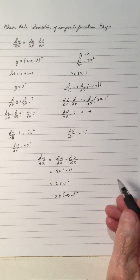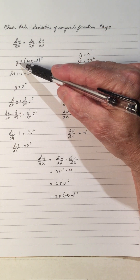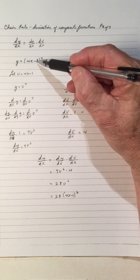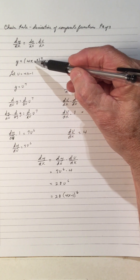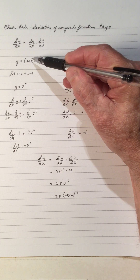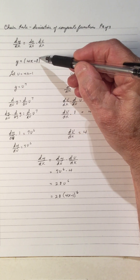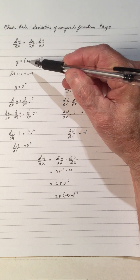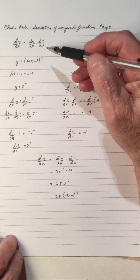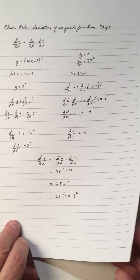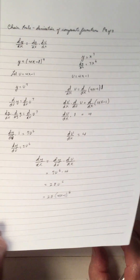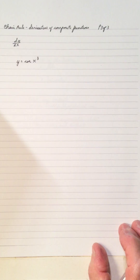This is the chain rule — when we do the derivative of y, we have an inside function to take care of. This is the 7th power of the function, so we do the derivative using the power rule, but we also have to do the derivative of 4x minus 1. We're just getting started, introducing the chain rule.